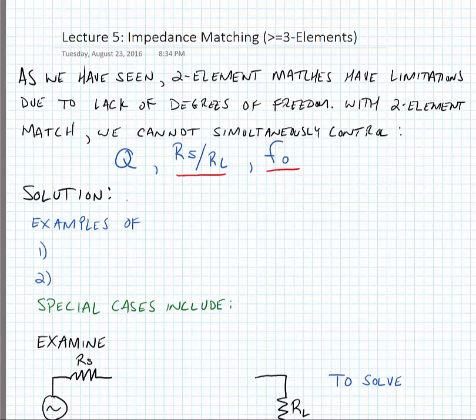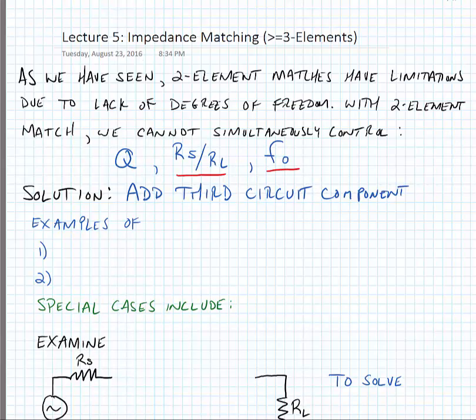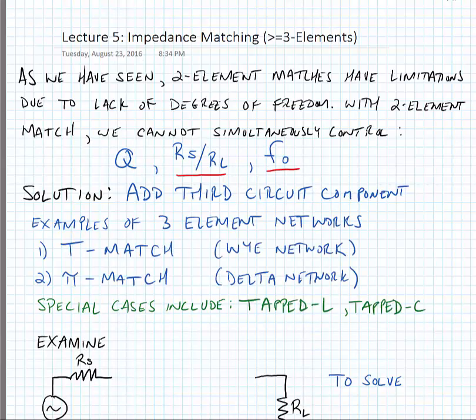Our solution is going to be to add another degree of freedom. We have a couple of examples of three element matching networks. Our three element choices are called a T match or a pi match — sometimes called Y network or delta network respectively in old circuit textbooks. We also have special cases that include a tapped inductor or a tapped capacitor.